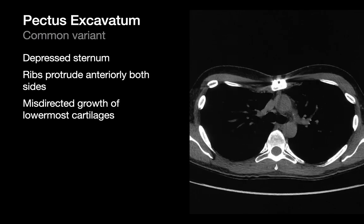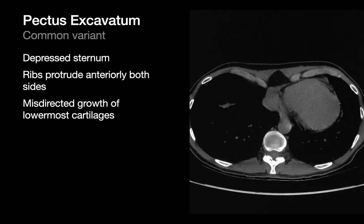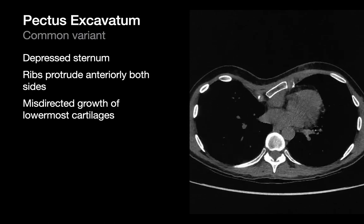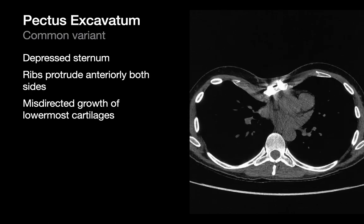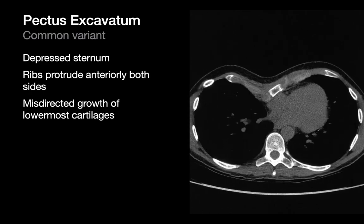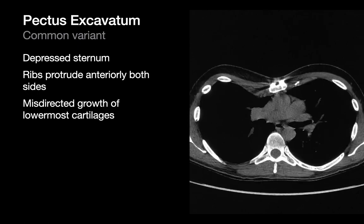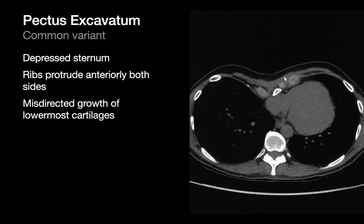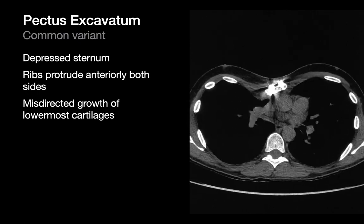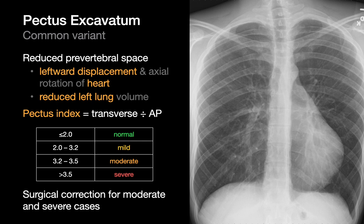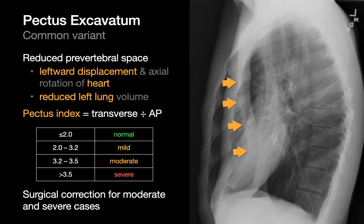Folks with pectus excavatum have a depressed sternum. In these patients the ribs appear as if they're protruding anteriorly on both sides relative to midline. Pectus excavatum is believed to result from some sort of abnormal growth of the inferior costochondral cartilages. Because the distance between the sternum and thoracic spine is decreased, the heart can sometimes be displaced leftward, as in this patient on the chest x-ray.